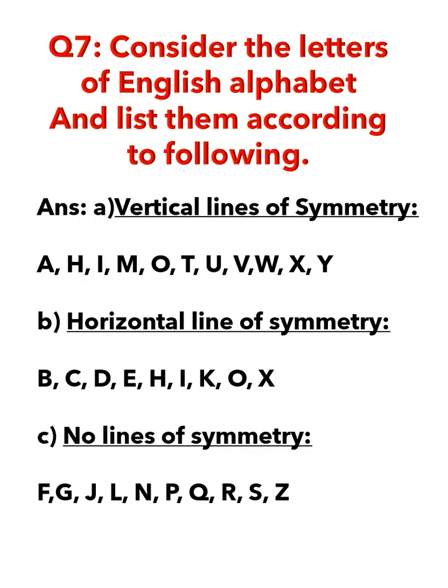The seventh question was: consider the letters of the English alphabet from A to Z and list them according to the following. Part A — alphabets with a vertical line of symmetry: A, H, I, M, O, T, U, V, W, X, Y. Part B — horizontal line of symmetry: B, C, D, E, H, I, K, O, X. Part C — no line of symmetry: F, G, J, L, N, P, Q, R, S, Z. These are the alphabets with different lines of symmetry.